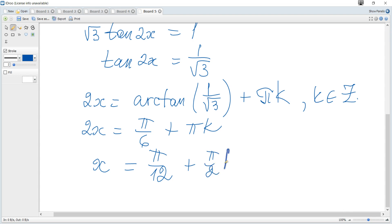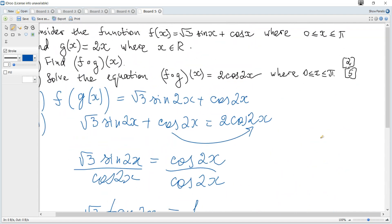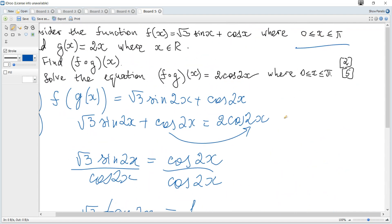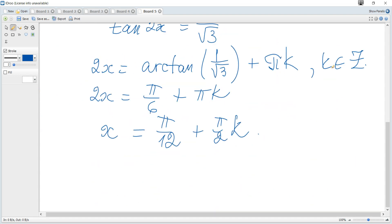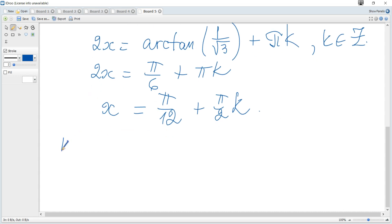It's the general solution with infinitely many solutions, but we need x between 0 and π. Let's start when k = 0. When k = 0, x = π/12, and yes, it's between 0 and π, so it goes to the answer.